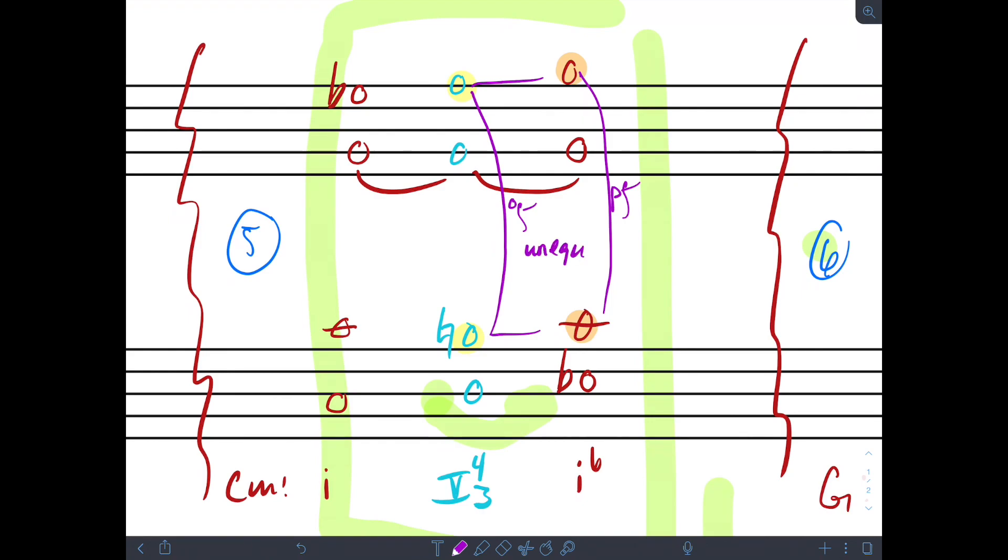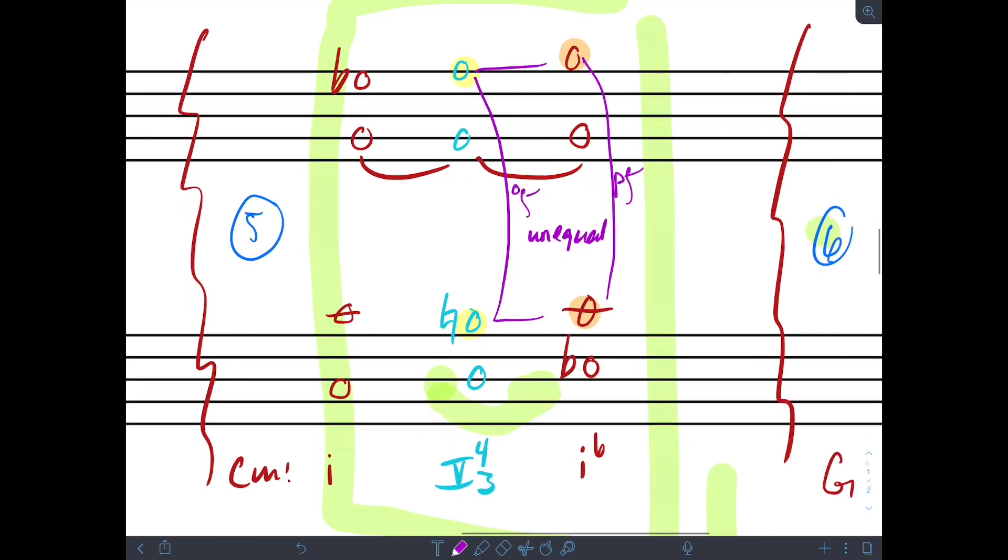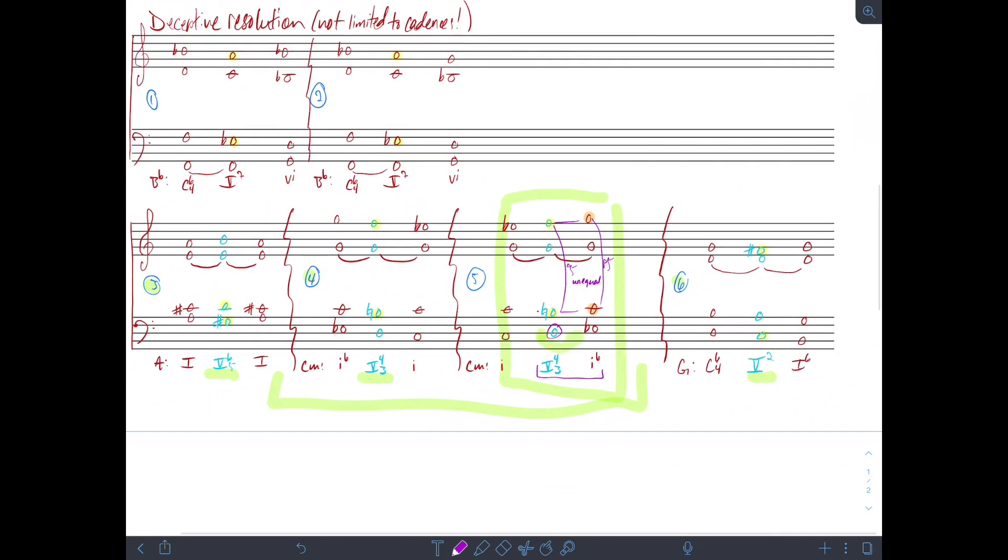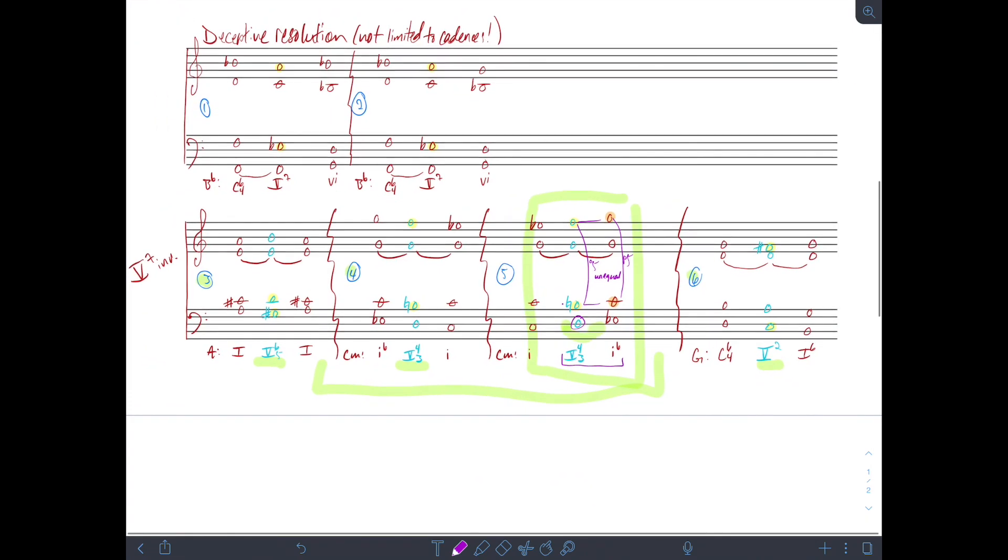It's acceptable as long as the bass is not involved in that unequal fifth. So here we have it between the tenor and the soprano, so it works. It won't have that jarring sound to the ear. As long as the bass isn't involved and there's good voice leading rationale for it, we can accept unequal fifths. So I just wanted to point that out.